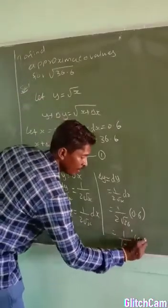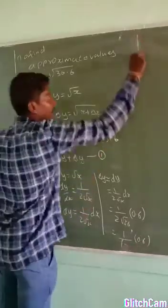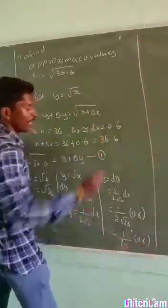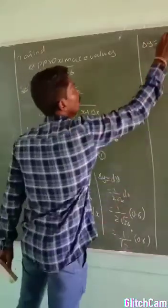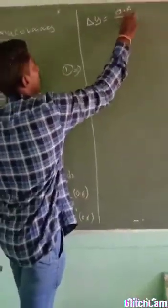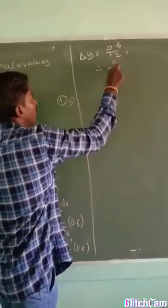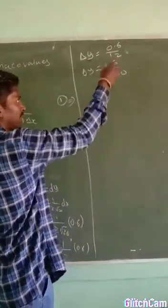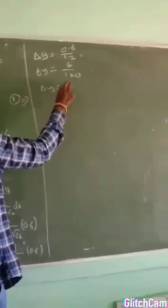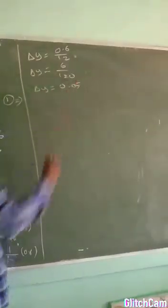Then 1 into 0.6. So finally we have delta y equal to 0.6 by 12. Now we can divide it with the same term. We are able to get delta y equal to 0.05.